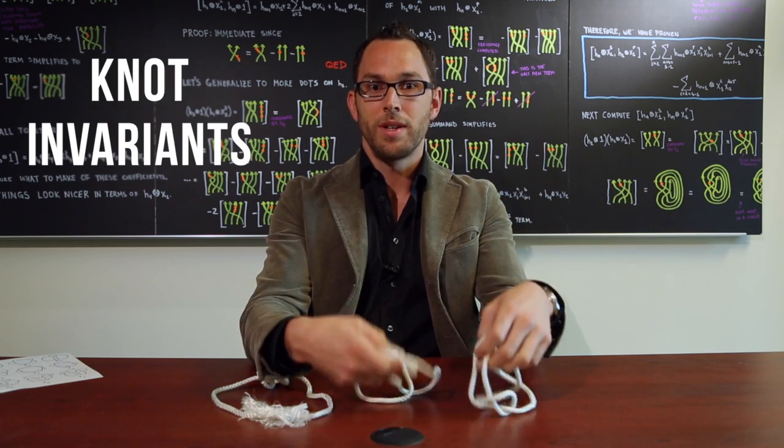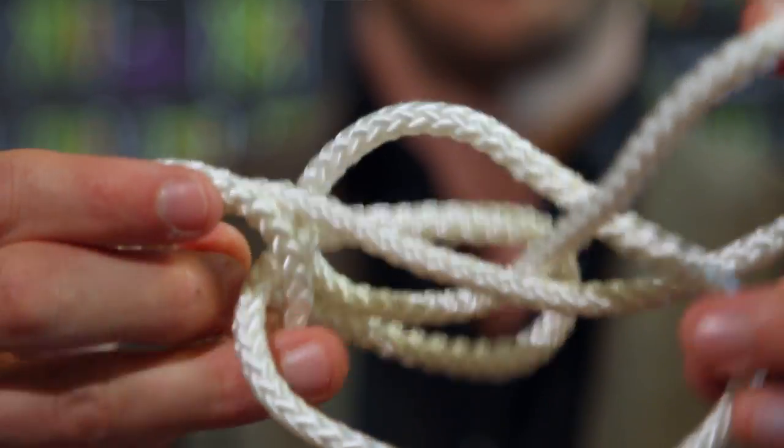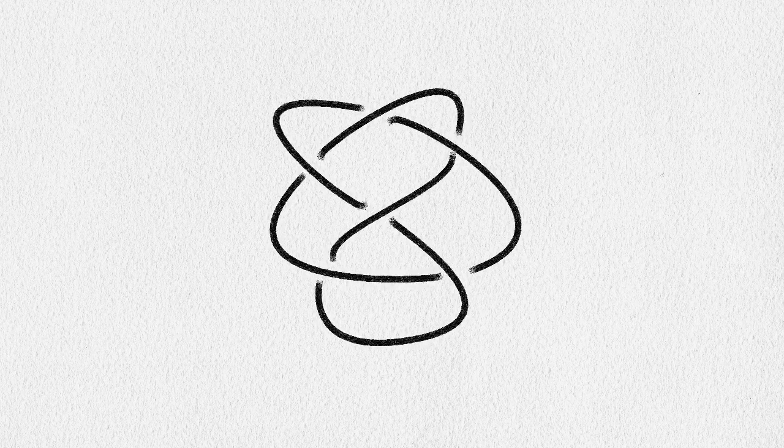We construct so-called knot invariants where I take this knot, on our piece of paper we can draw a picture of this knot, and by looking at the diagram I can perform a calculation which will produce a polynomial.